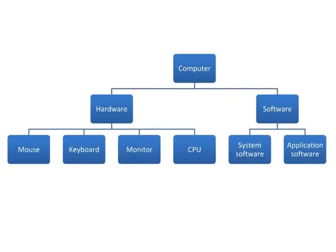What is hardware? The physical parts of a computer that we can touch and feel are called hardware. For example: mouse, monitor, keyboard and CPU. Let us see these parts one by one.